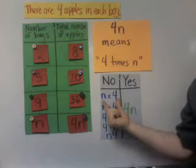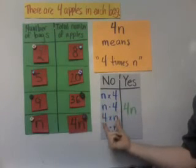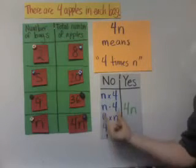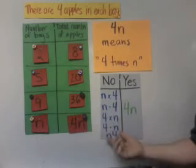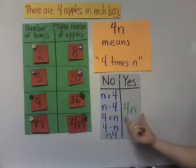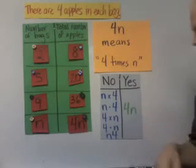We don't like n times four or n dot four or four times n like four x n or four dot n or n four. These are all no. I mean, a mathematician would understand what you're talking about. But really, this is what we want. We want four n to represent four times n.